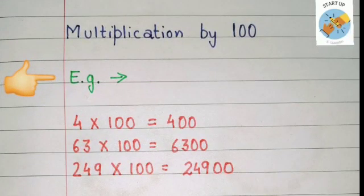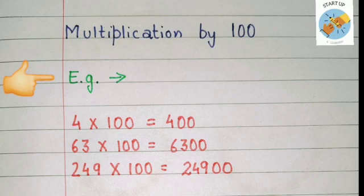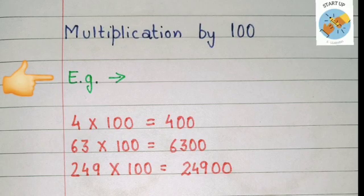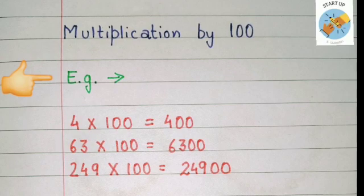Let's see some more examples. To multiply four by one hundred, first we will put two zeros at the end — that is in the ones and tens place — and then we will multiply four by one. So the answer will be four hundred. Sixty-three multiplied by one hundred is equal to sixty-three hundred. Two hundred forty-nine multiplied by one hundred is equal to twenty-four thousand nine hundred.